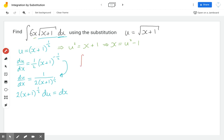So we have the integral of 6 times x, which is the u squared minus 1, times by the square root of x plus 1, which is u, times by what we've replaced the dx with, which is the 2x plus 1 to the half du. But now the x plus 1 to the half, remember, is equal to u. So we can actually replace this with 2u du.